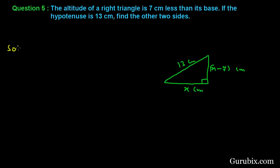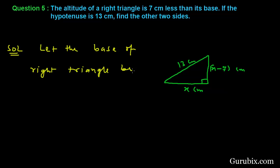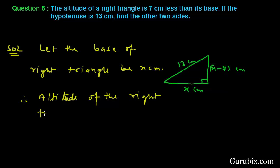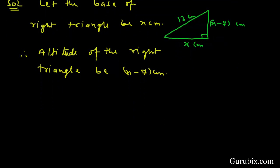Let us solve it. Let the base of the right triangle be X centimeters. Therefore, the altitude of the right triangle will be X minus 7 centimeters, because it is given that the altitude is 7 centimeters less than its base. If the base is X centimeters, then the altitude will be X minus 7 centimeters. Now we shall apply the Pythagoras theorem.